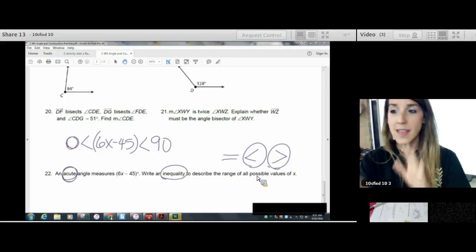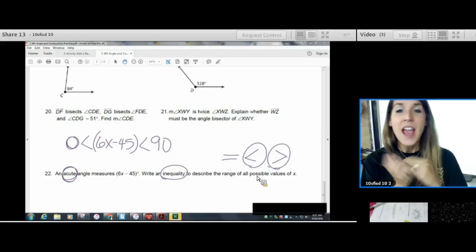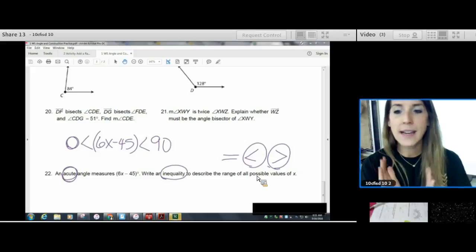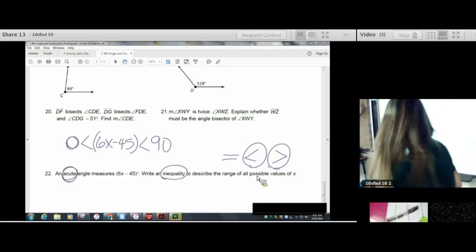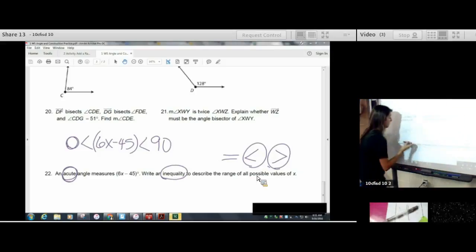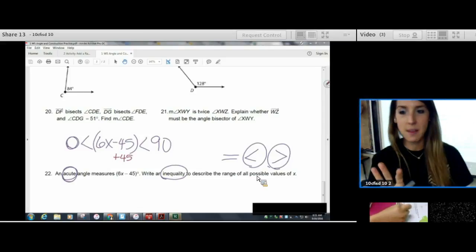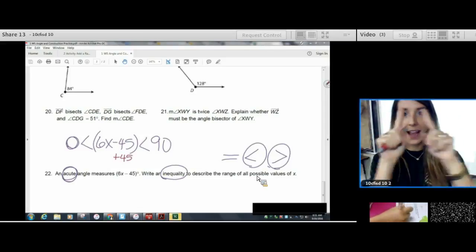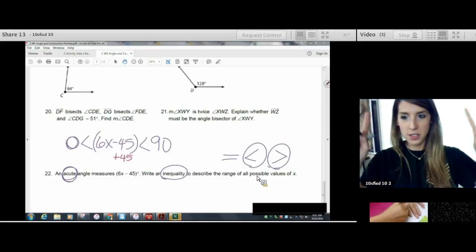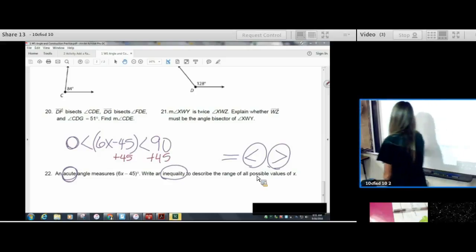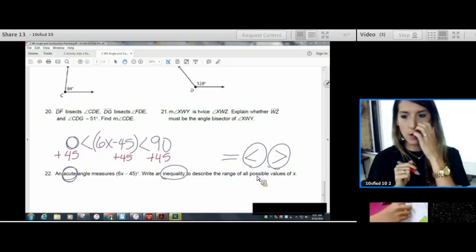Write 0 down. My angle, which is 6X minus 45, needs to be greater than 0 and less than 90. Is everyone okay with step 1, which is setting it up? Now, step 1. That's the setup. That's the most important part. Now we solve this just like any old algebra problem. If you have minus 45, how do you move it? How do you move it to the other side of the equation? The cool part is, whatever you're doing to the middle, you go and do to both sides like this.